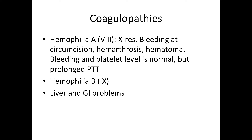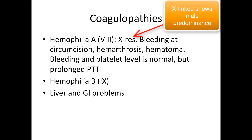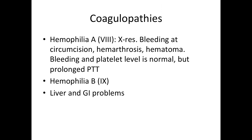In coagulopathies, you have congenital and acquired forms. Congenitally, any clotting factor can be deficient, but we'll focus on factor VIII and factor IX. Factor VIII deficiency causes hemophilia A — an X-linked recessive disease usually detected at birth, often presenting with excessive bleeding at circumcision. Later, you see hemarthrosis (bleeding in joints) and hematoma (extravascular bleeding). Labs show prolonged bleeding, normal platelet levels, but prolonged PTT because factor VIII is in the intrinsic pathway.